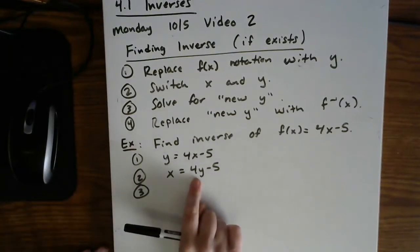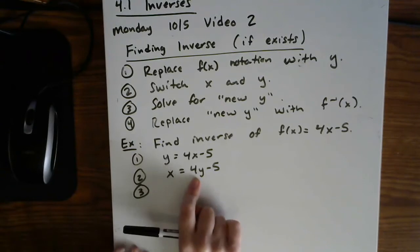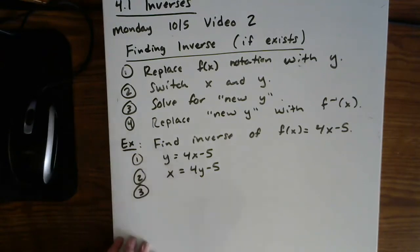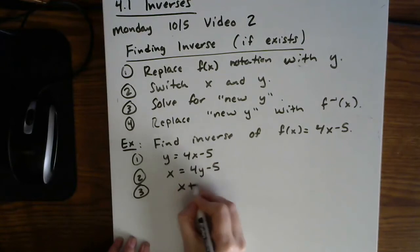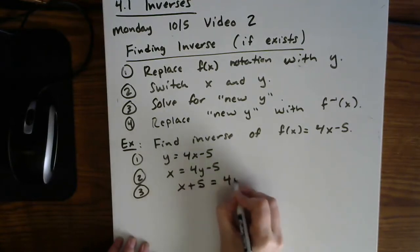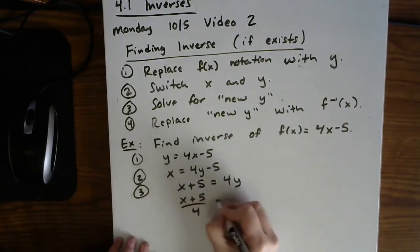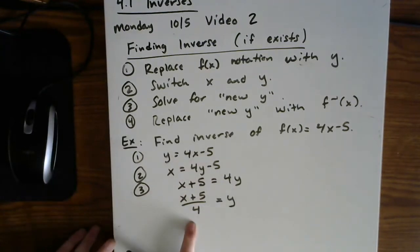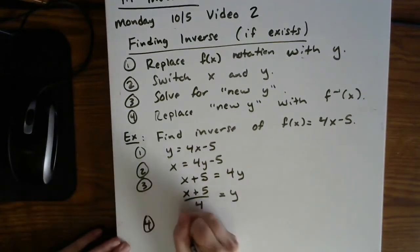Step three, solve for y. So here's where you would need to do a little bit of a review perhaps from section 1.3 and 1.5. But we'll just do the solving here by first adding five to both sides, and then divide both sides by four. So there is the solution. Then put this back in inverse notation.